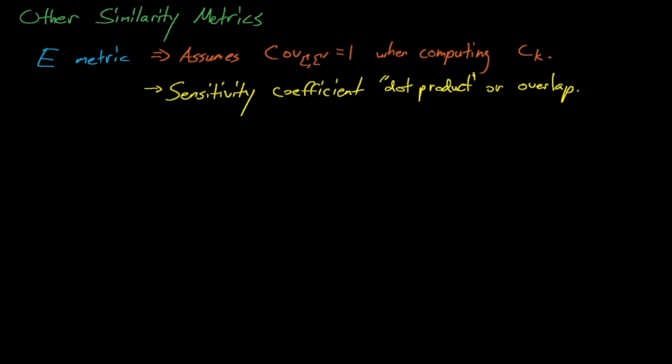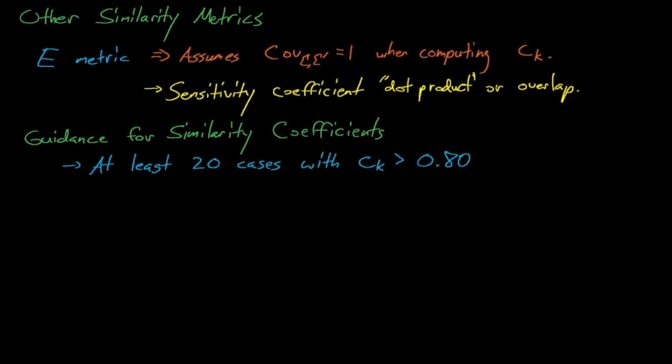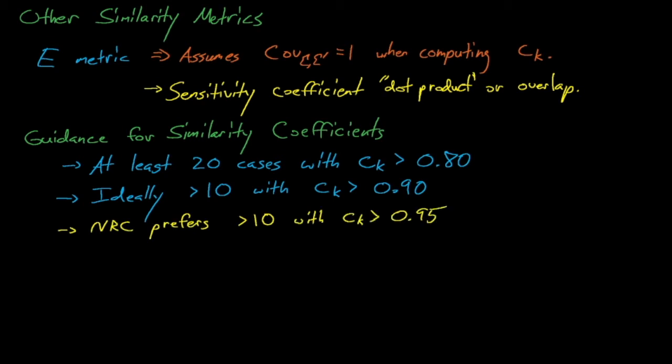Let's close by discussing how many similar systems we need to identify to have confidence in our USL estimates, and how similar do these systems need to be? Studies by Broadhead, Reardon, and Hopper at Oak Ridge suggest that we need at least 20 benchmark experiments with a c-sub-k of above 0.8 to accurately predict the bias in an application, and ideally, we'd like to have at least 10 cases with a c-sub-k of above 0.9. The NRC sets the bar even higher than this, recommending at least 10 benchmark experiments with a c-sub-k of above 0.95. Blind studies have shown that the USL stats trending analysis method does a pretty good job of estimating computational biases if and when we have a significant number of highly similar benchmark experiments, but what happens if we don't?